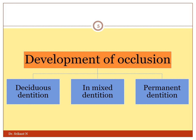Occlusion develops in a dynamic fashion. We have two sets of teeth — deciduous as well as permanent dentition — and there is an intervening mixed dentition phase. The way the teeth contact with each other is different in these three states: the deciduous dentition, mixed dentition, as well as in the permanent dentition.